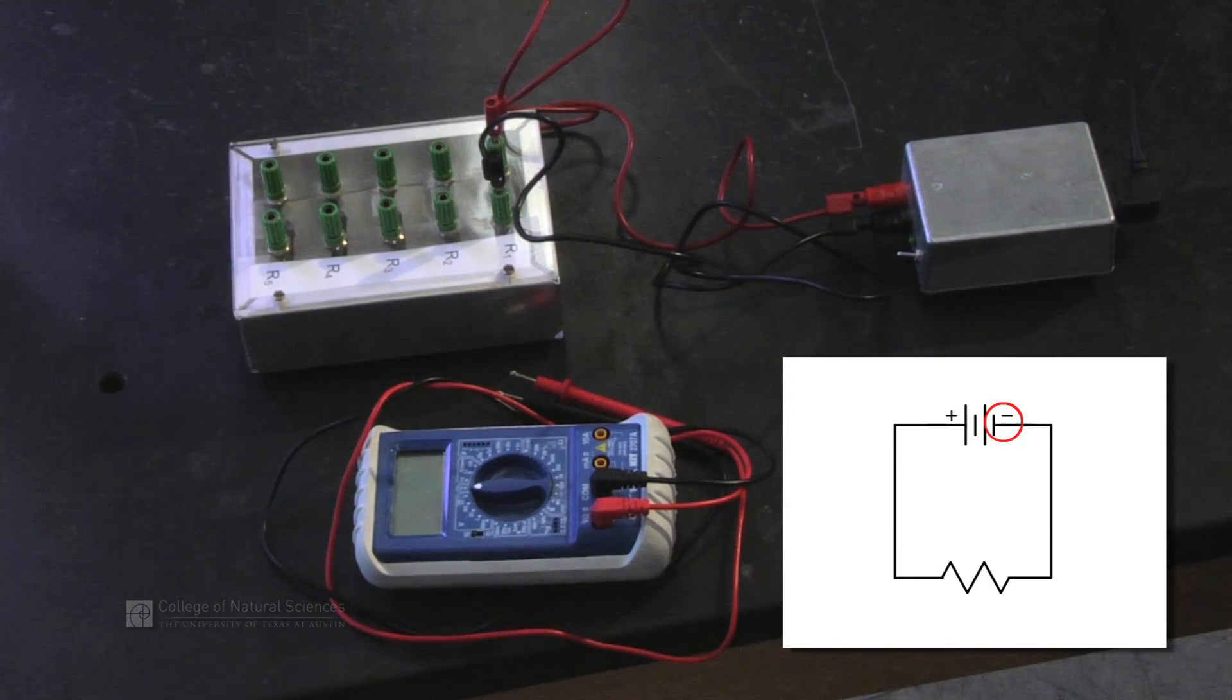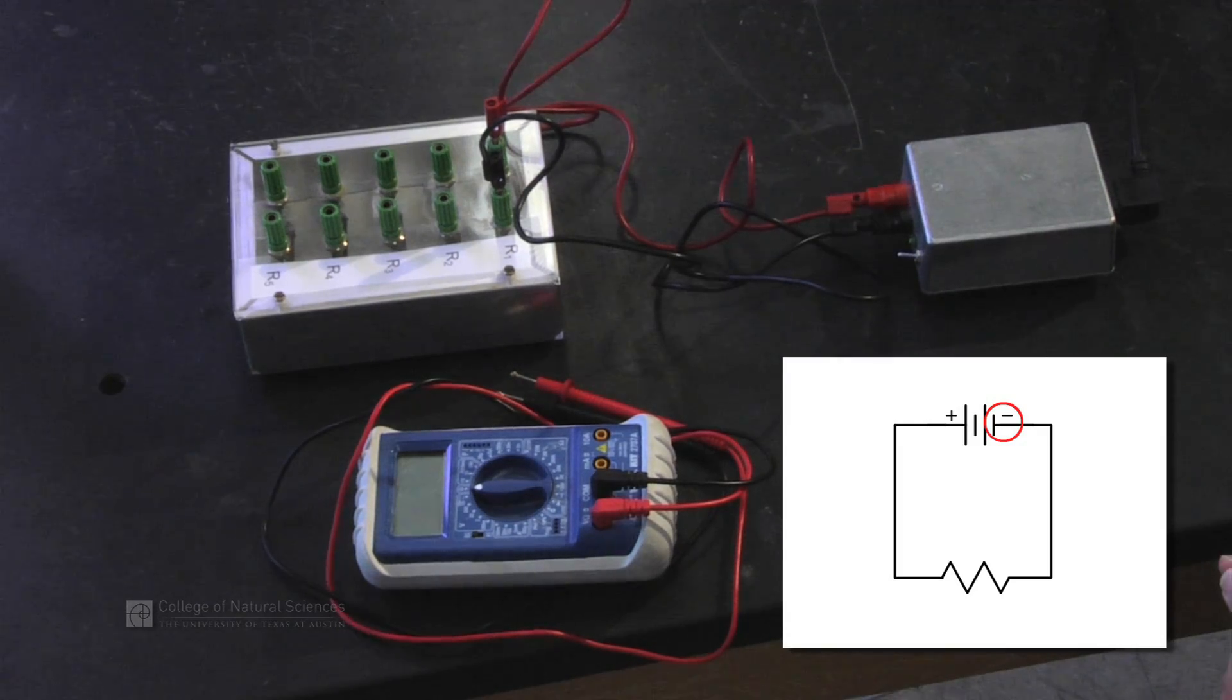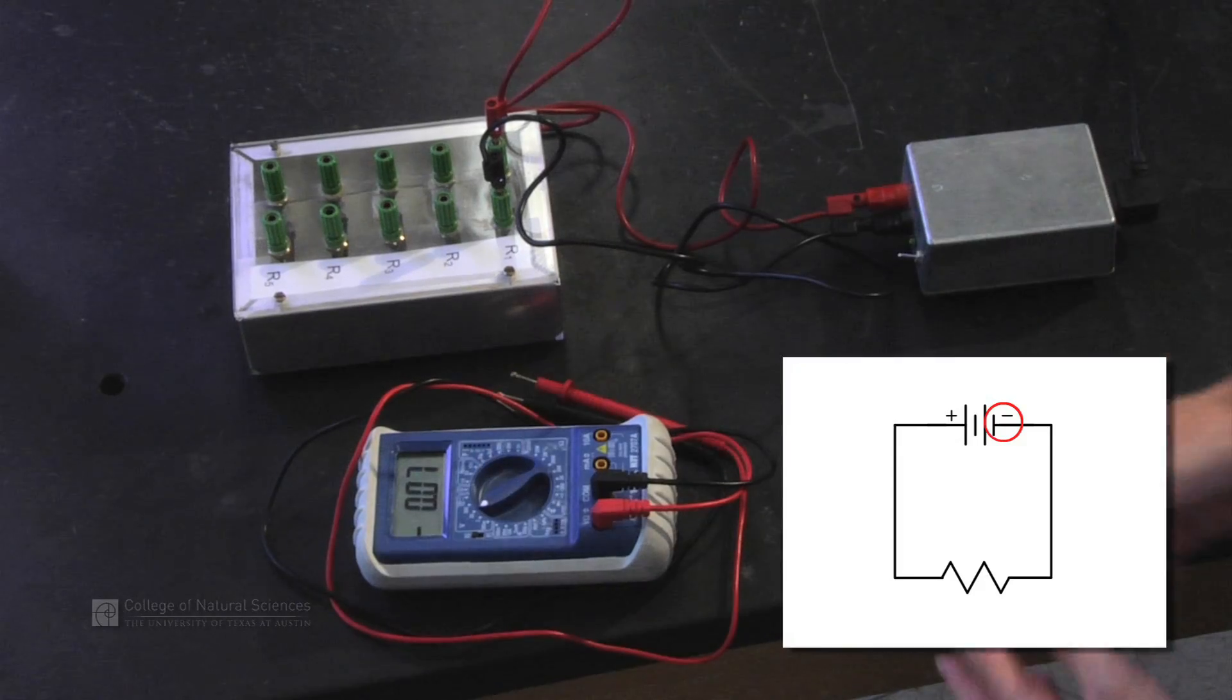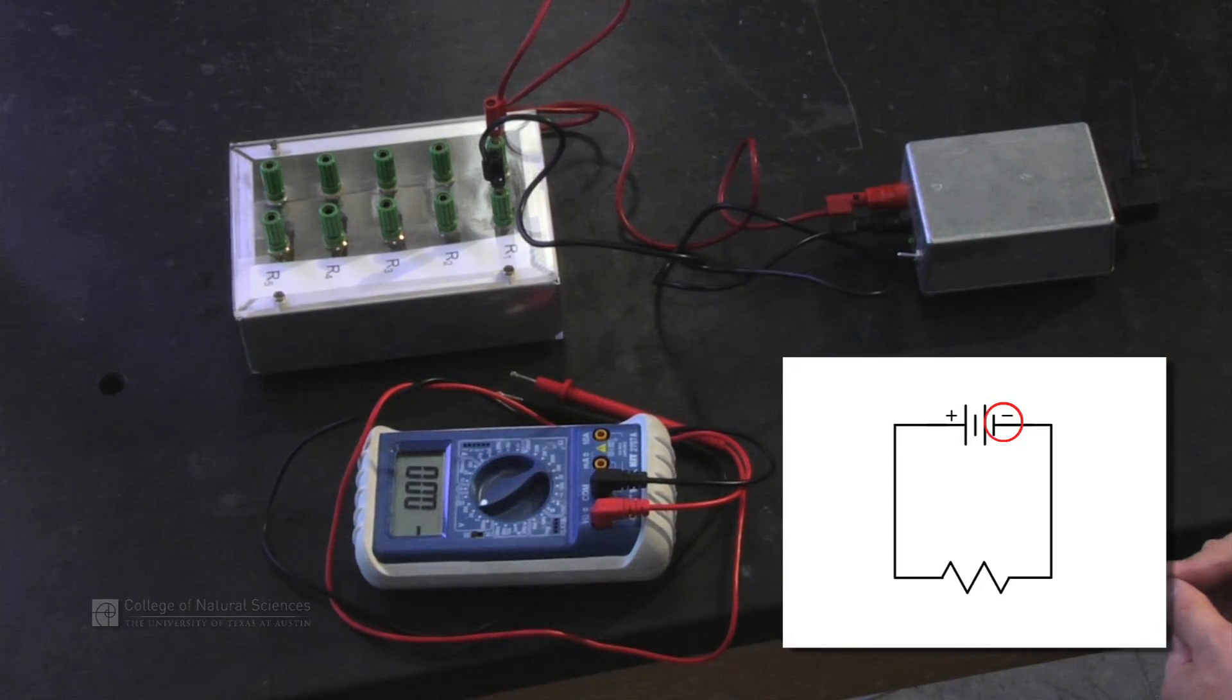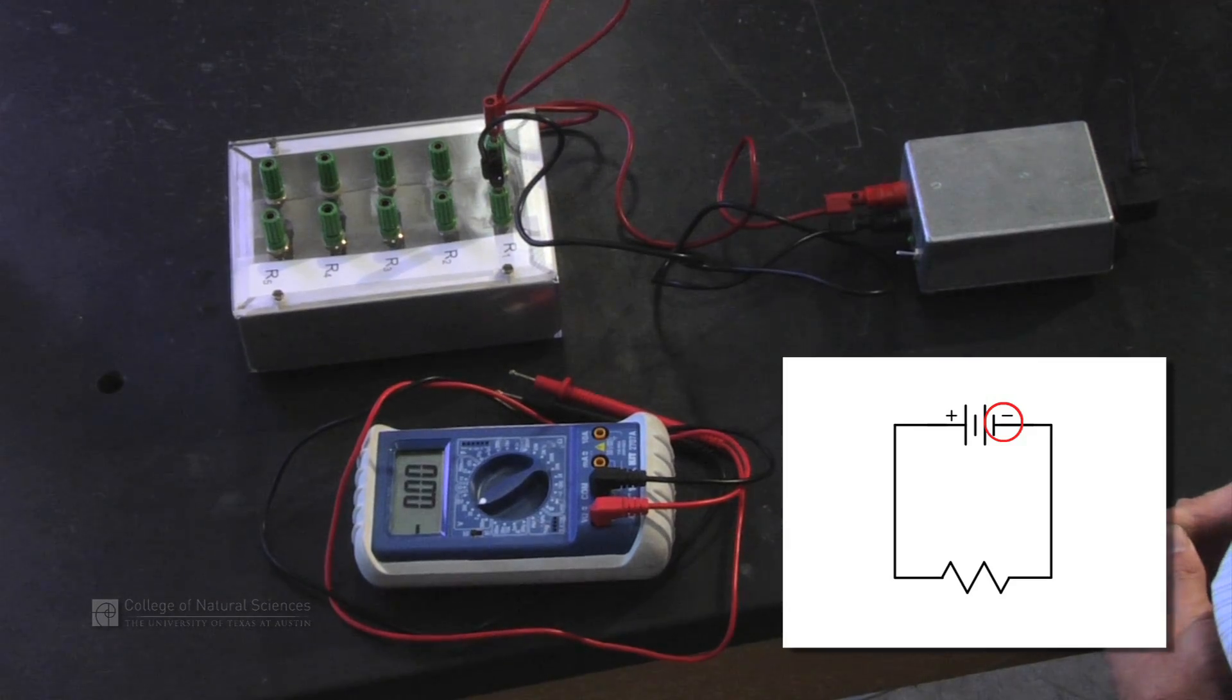Now that we have our circuit built and the power is turned on, we can go ahead, look at our digital multimeter, make sure that it's set to the correct setting. In this case we're going to be running under 20 volts again.